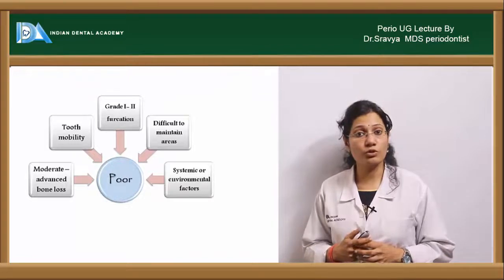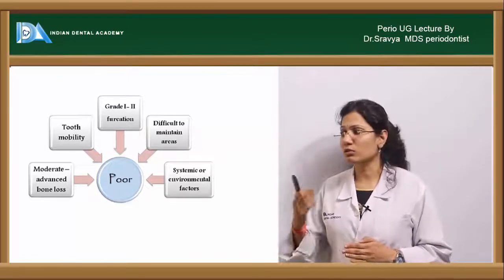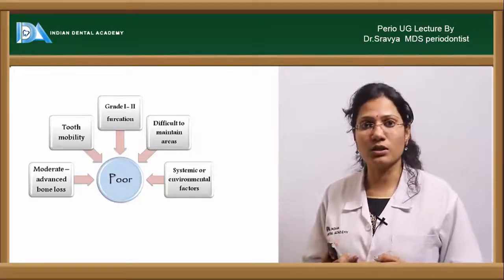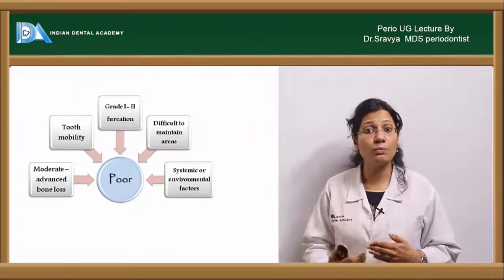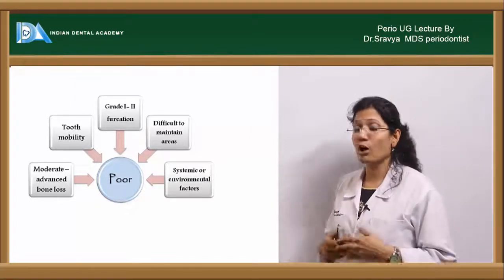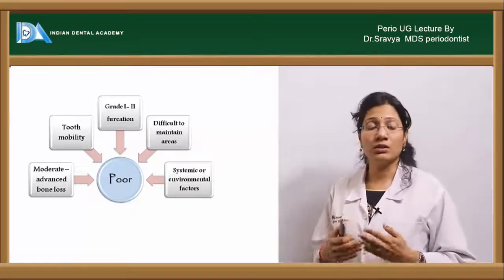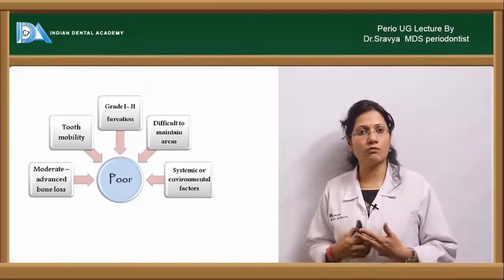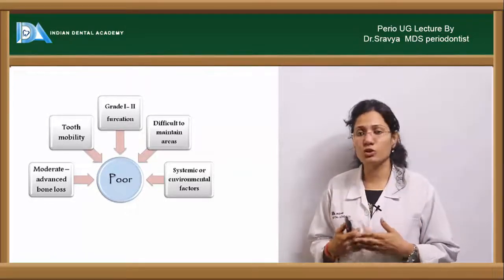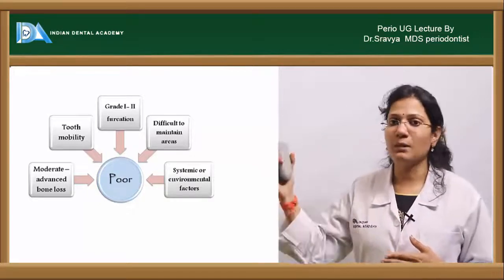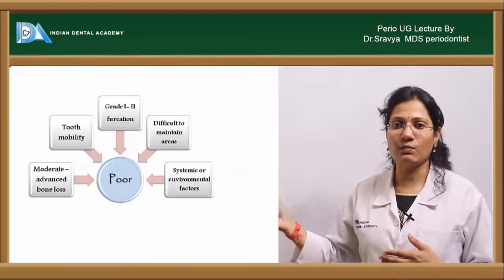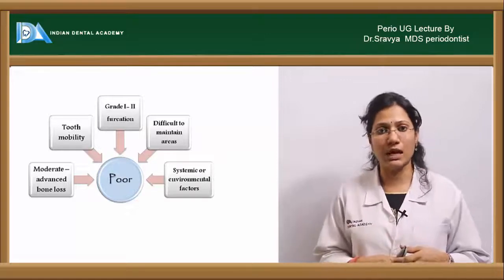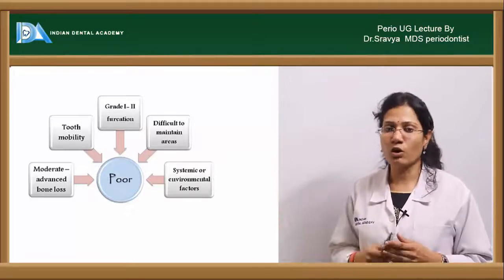In poor prognosis, the bone loss is increasing — there is moderate to advanced bone loss. The furcation grades are also increasing from grade one to grade two furcation, and tooth mobility is increasing from grade one to grade two or probably grade three. The areas are becoming very difficult to maintain because with too much mobility and furcation involvement, all these areas become inaccessible to oral hygiene maintenance. The patient is also having systemic and environmental factors that are probably uncontrolled, such as uncontrolled diabetes mellitus, placing him in a poor state of prognosis.